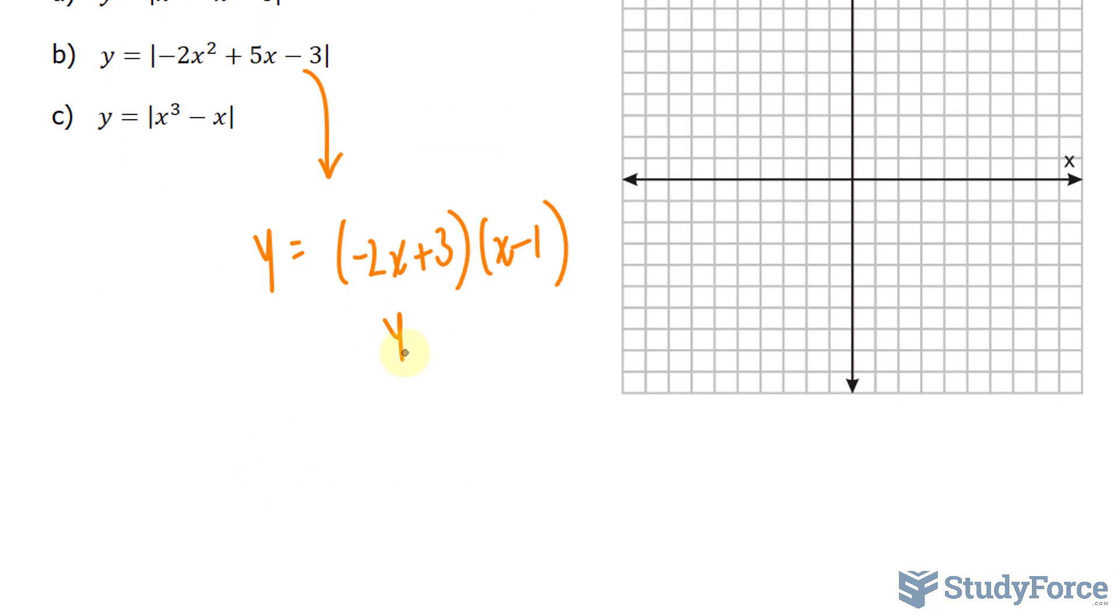If you factor this correctly, you should end up with an expression that looks like this. Now, of course, setting y is equal to 0, you can solve for x. If I set y is equal to 0, I end up with a point that's 1 and 0, and a point at 1.5 and 0.